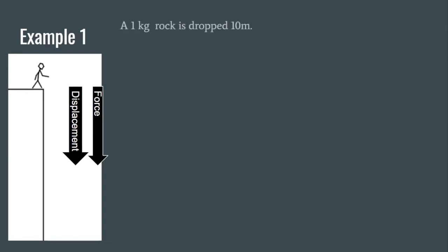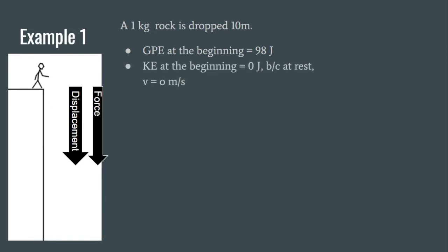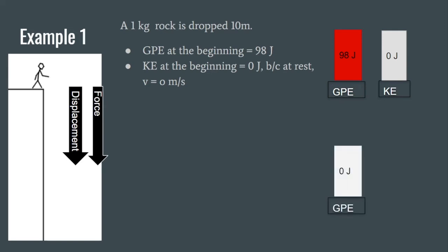Let's look at an example with numbers. A 1 kg rock is dropped from 10 meters. The GPE at the beginning is 98 joules (mass × gravity × height = 1 × 9.8 × 10). KE at the beginning is 0 joules because it's at rest. At the end, right before hitting the ground, all 98 joules of GPE have been transferred into kinetic energy. We're assuming no friction or air resistance.